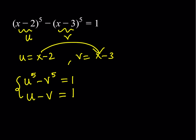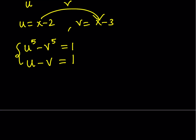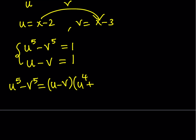So this is the system I was trying to get. A lot of times when we have a system, we try to reduce the number of variables. Here, we're doing the opposite — we're going from one variable to two variables. I'm not going to replace u with v plus 1. Instead, I'm going to factor u to the fifth minus v to the fifth, which can be written as u minus v multiplied by u to the fourth plus u cubed v plus u squared v squared plus u times v to the third plus v to the fourth.